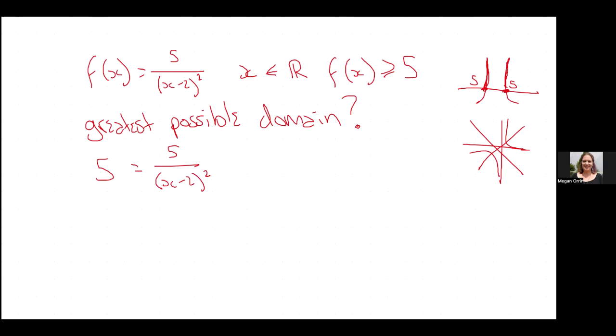And how many solutions should I get? Two, right? This is a quadratic. They might be repeated roots. We'll see. Probably not because I should have two different values because the graph should look like that. So let's bring this across. (x - 2)² = 5. Bring that back over. So (x - 2)² is 5/5. I know. It's amazing. Square root of one.